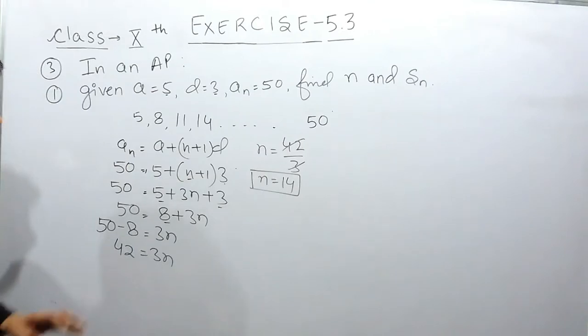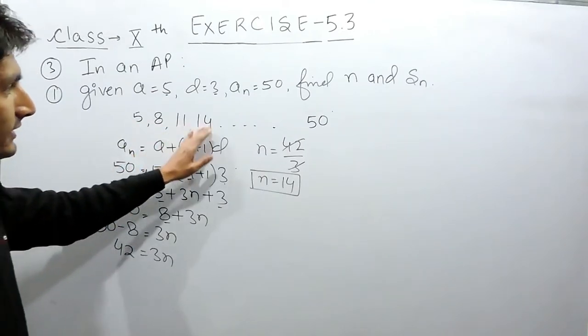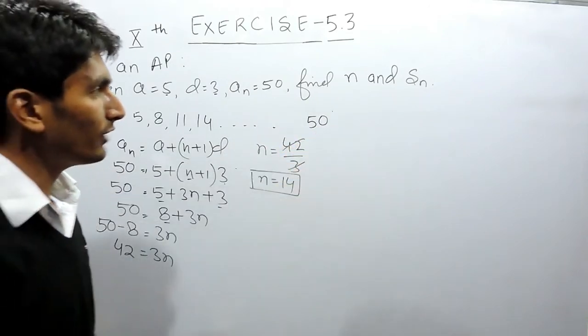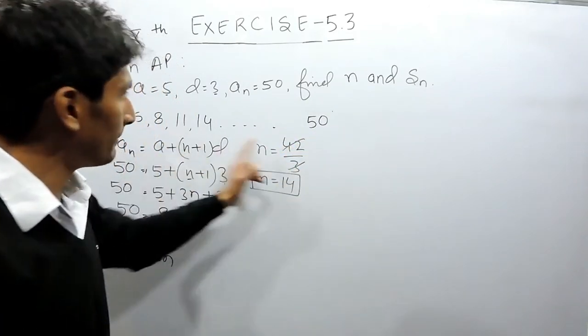So here 14 terms must be there in this AP where the first term is 5 and the last term is 50. Now you have to find the sum of this AP.